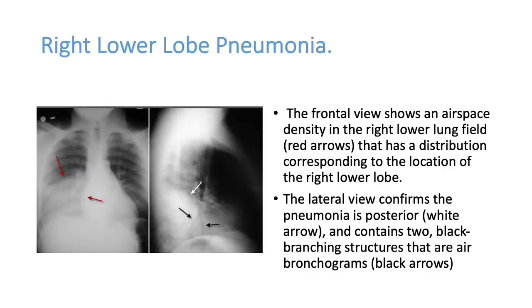Here you can see a right lower zone homogeneous opacity. It looks like a consolidation, but if the cardiac shadow shifts towards the lesion and the diaphragm is pulled upwards, you have to think about collapse. Here nothing has shifted, so you can suspect right lower lobe pneumonia or consolidation.